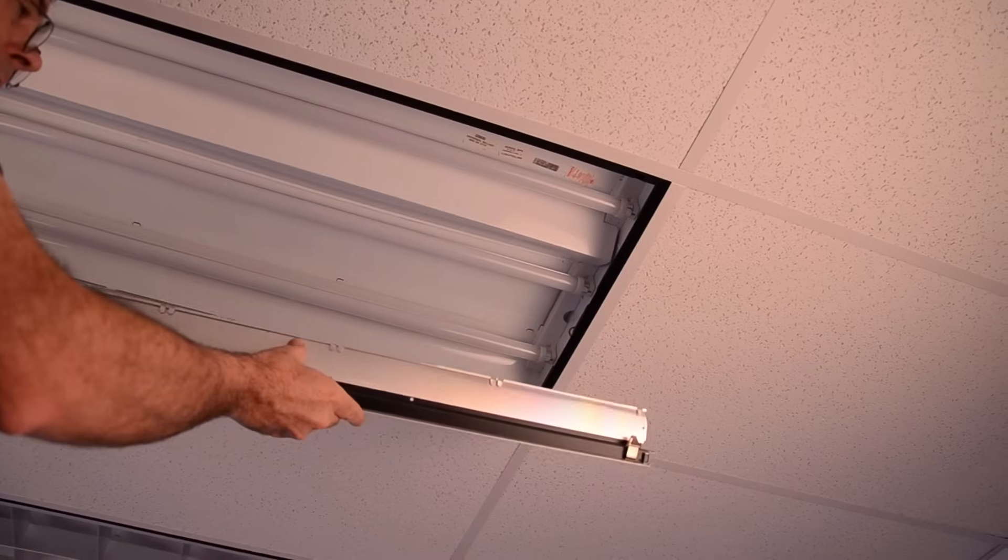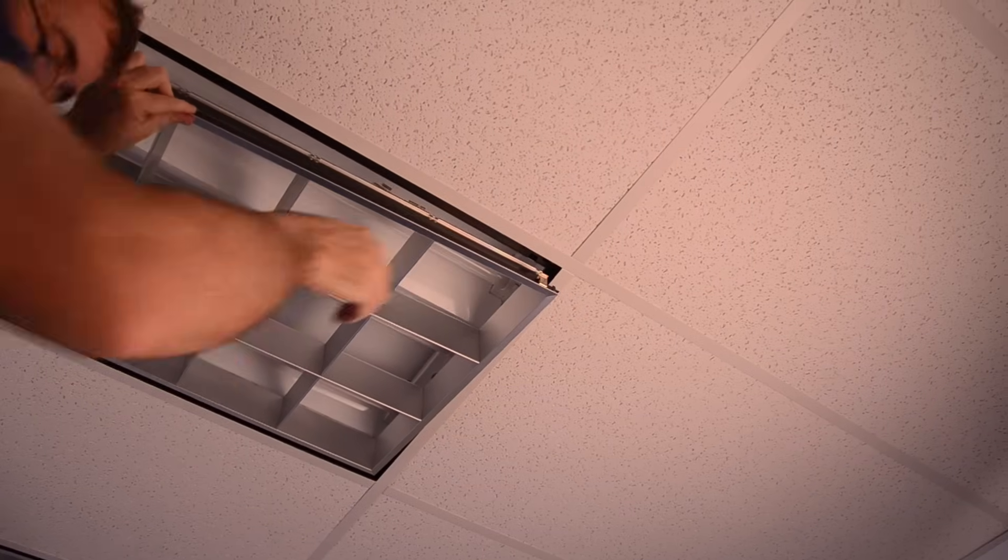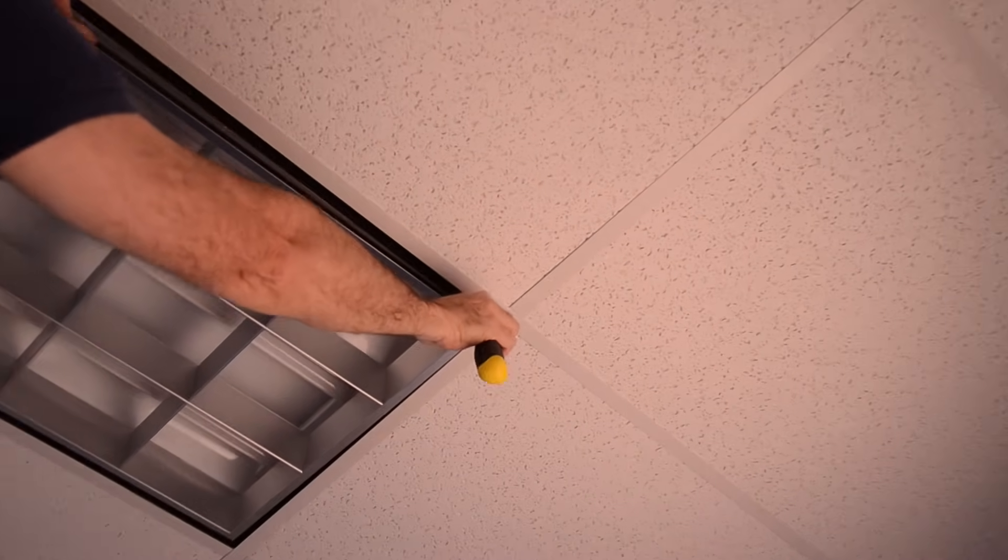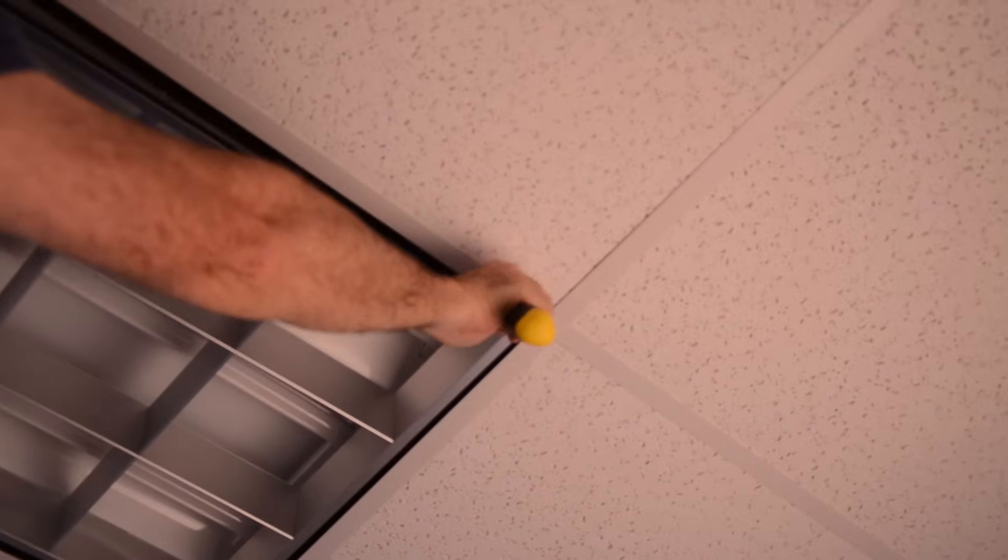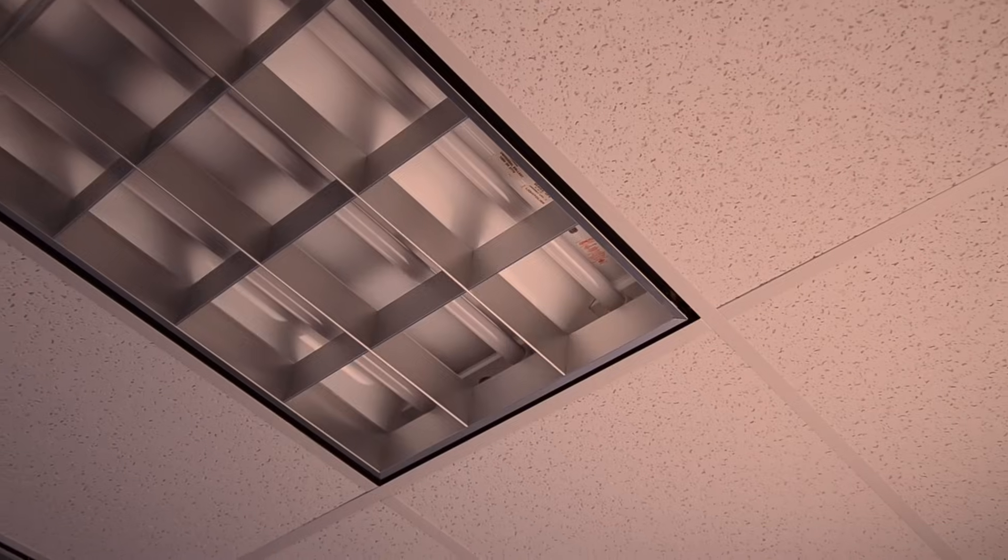The only thing left to do with our retrofit is to put the lenses, or in this case the louvers, back up. This has a little spring. The way I like to do it is I like to stick my screwdriver in here to make sure that thing lines up correctly. Once the springs are in, the louvers are done, and you're done with the project. You now have an energy efficient LED T8 lighting system.